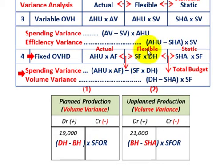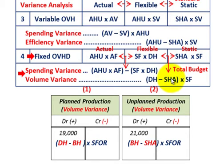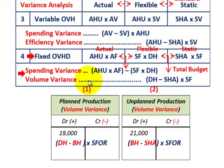The volume variance is the difference between our flexible amount and our static budgeted amount. That's the difference between denominator hours (total budgeted direct labor hours) and standard hours allowed, times the standard fixed overhead rate. Once we know our spending variance and volume variance, we can break the volume variance down between planned production and unplanned production variances.